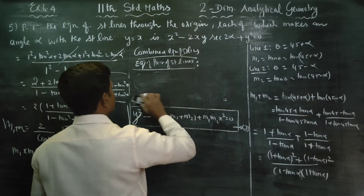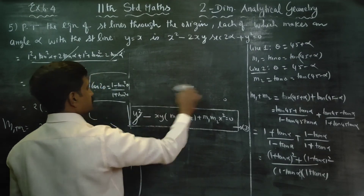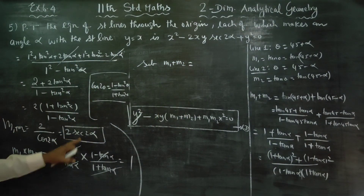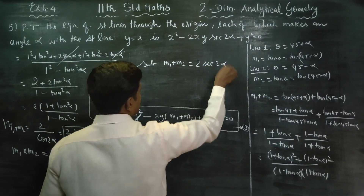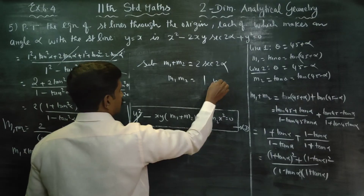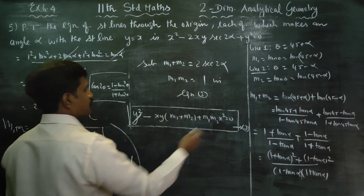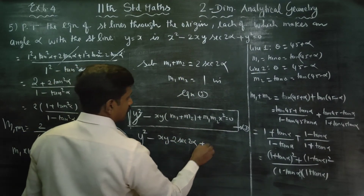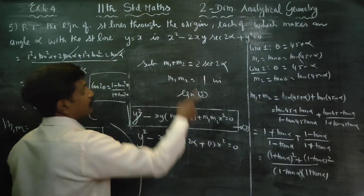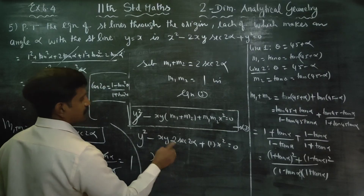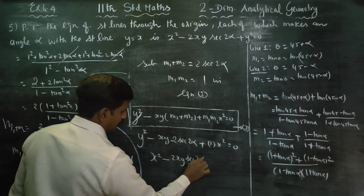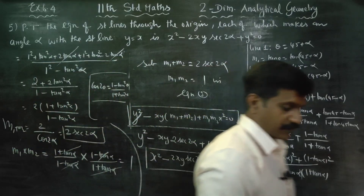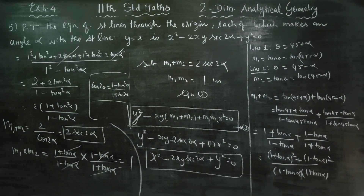Substituting m₁ + m₂ = 2 sec(2α) and m₁m₂ = 1 into equation number 3: y² − (m₁ + m₂)xy + m₁m₂x² = 0 becomes y² − 2xy·sec(2α) + x² = 0. This is the required equation of the pair of straight lines. Thank you.